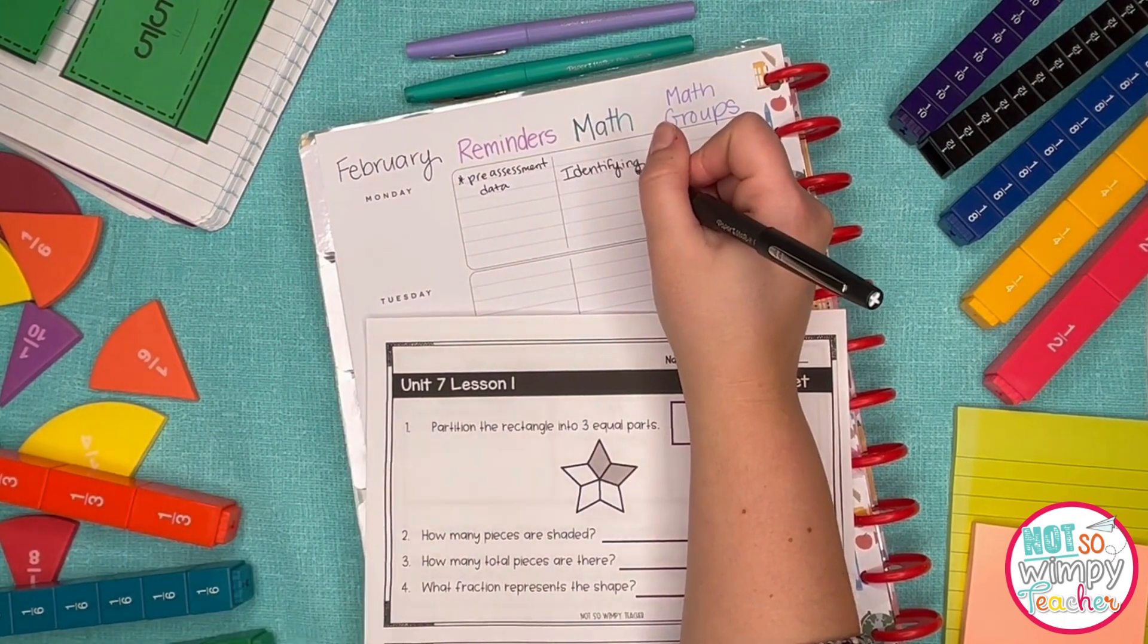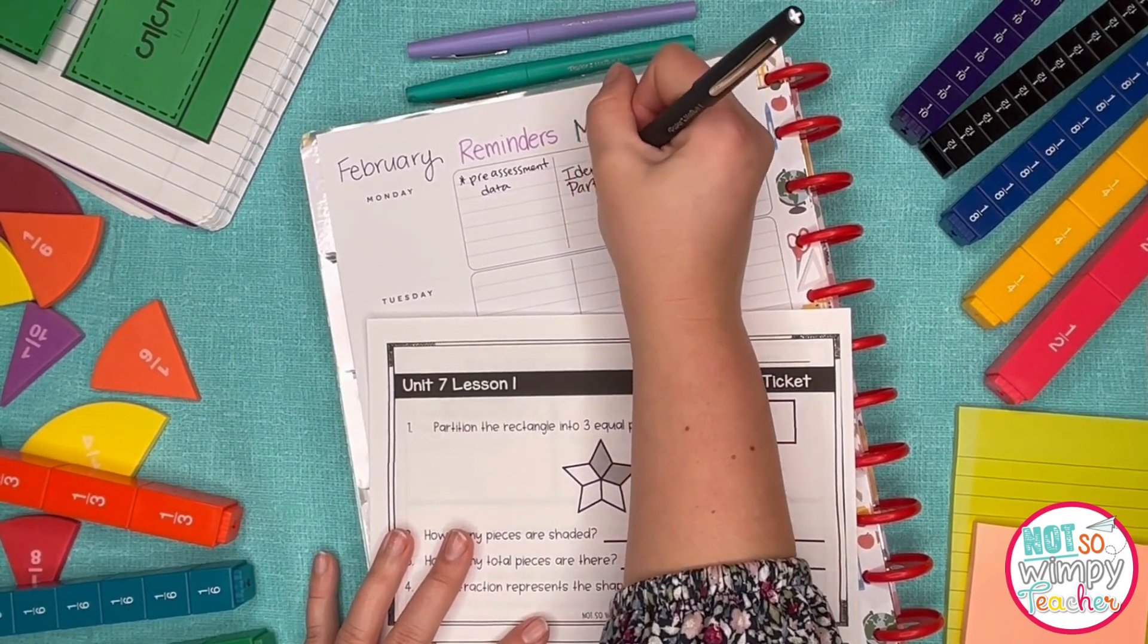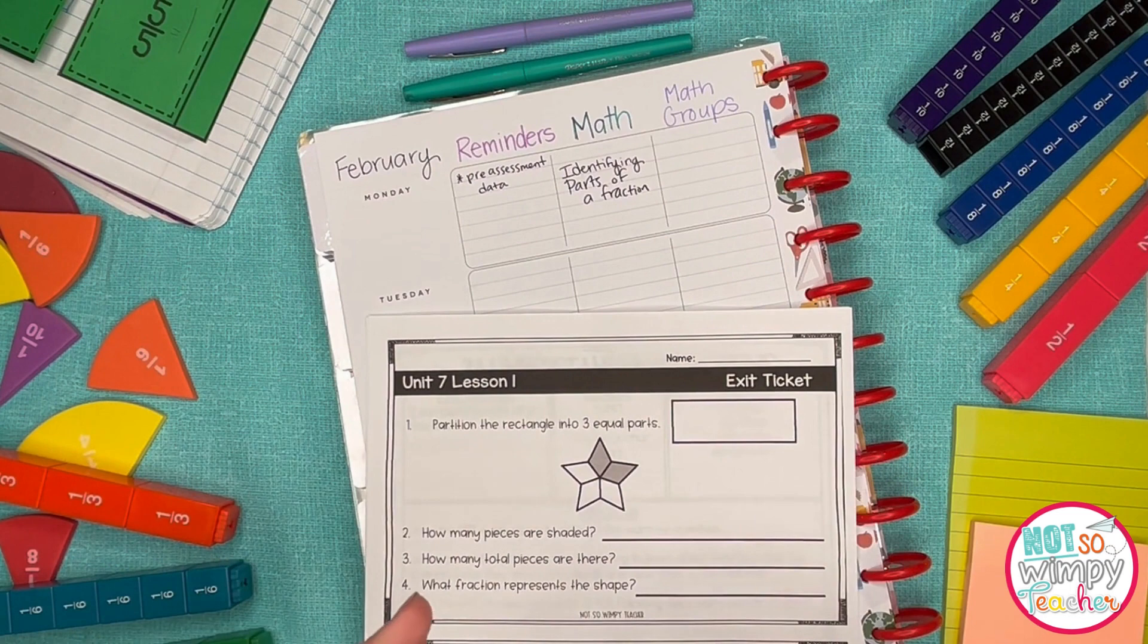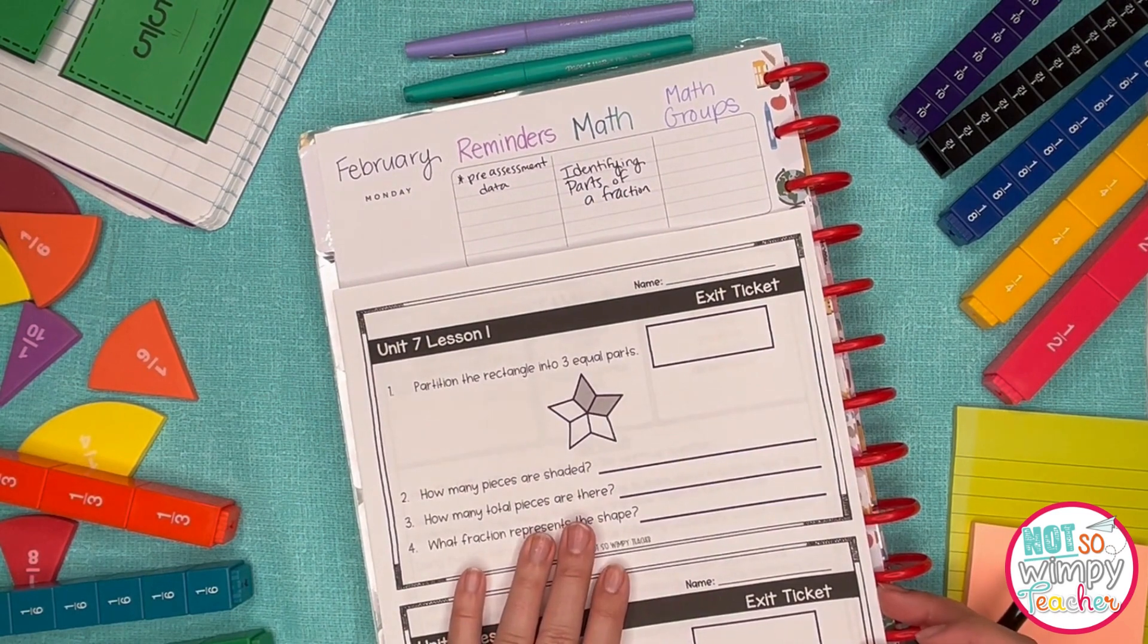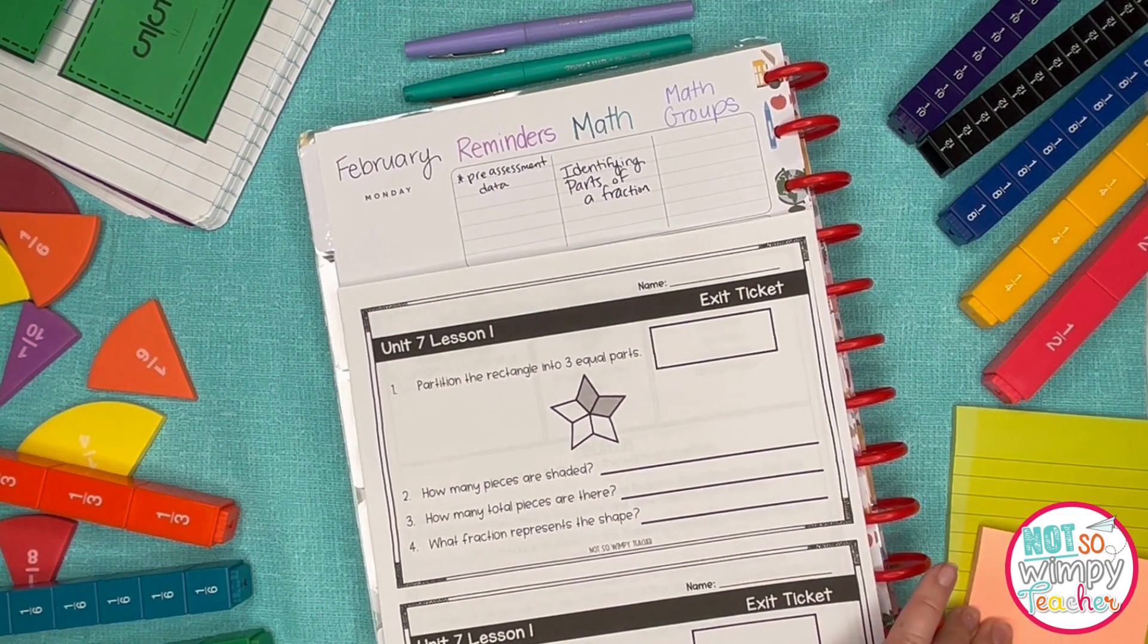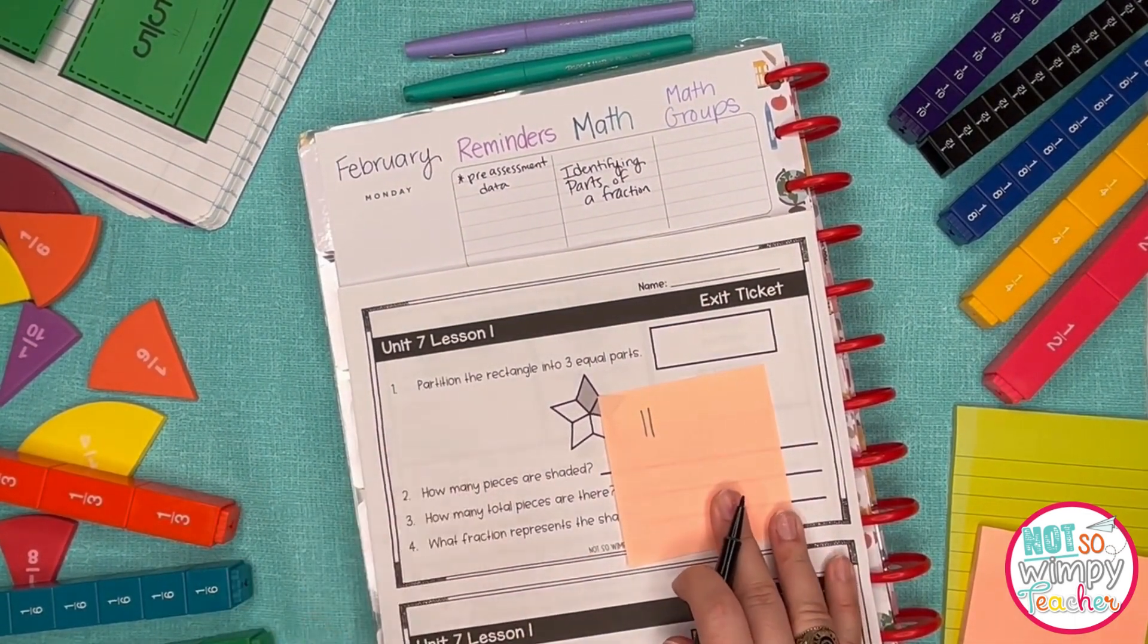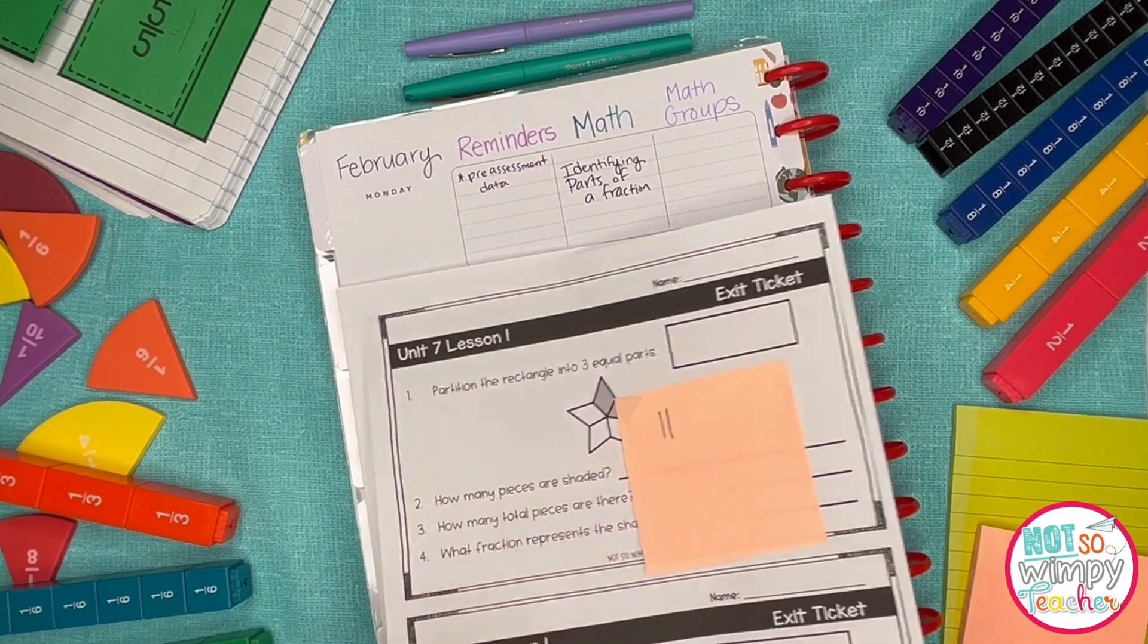I'm going to go ahead and just write it in my math block, identifying parts of a fraction. Now you did see that exit ticket at the very end as well. I'm going to make copies of this for my students and I'm going to use this on Monday in addition to that pre-assessment data. I only need 11 of these because there's two to a page.